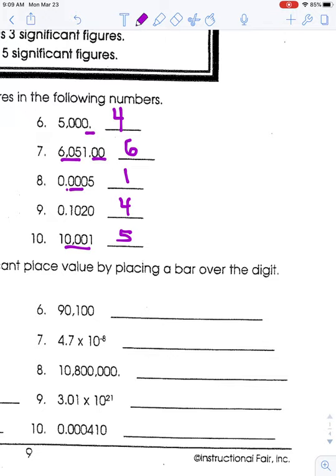Welcome back. On number six, 90,100 — there's no decimal point, so the trailing zeros do not count as significant; I put the bar over the one. Number seven: bar goes here. Number eight: 10,800,000 has a decimal point, so all the trailing zeros count and the bar goes on the last zero. Number nine: 3.01 — the one is significant being one through nine, so the bar goes there. Number ten: there's a trailing zero after a decimal point, so that is significant and the bar goes there.